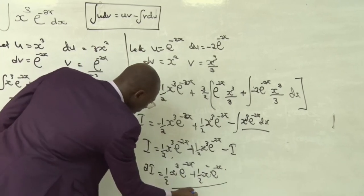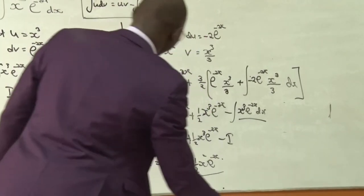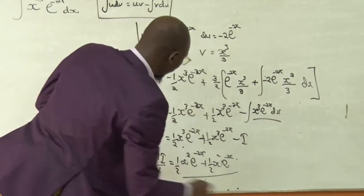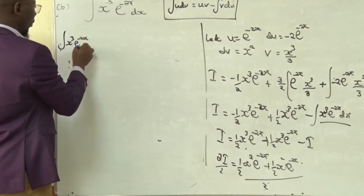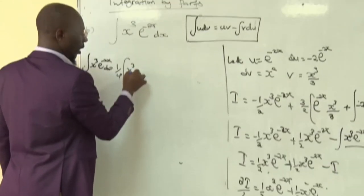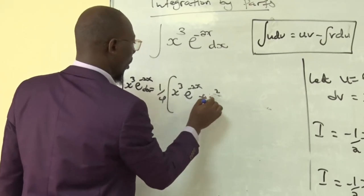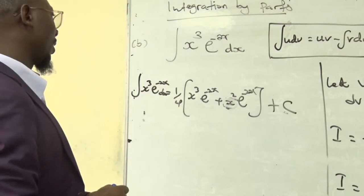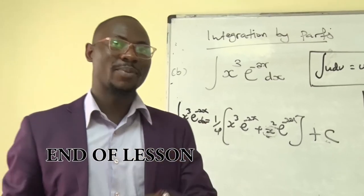Dividing both sides by 2 gives us the final integral of x³·e^(−2x) dx. Everything divided by two gives the result. Thank you.